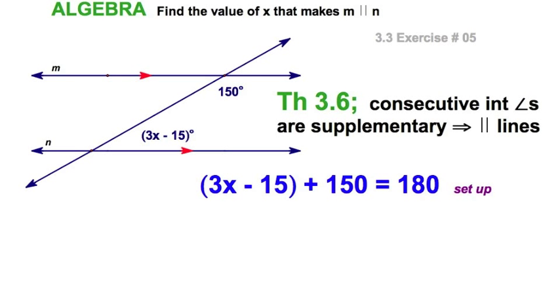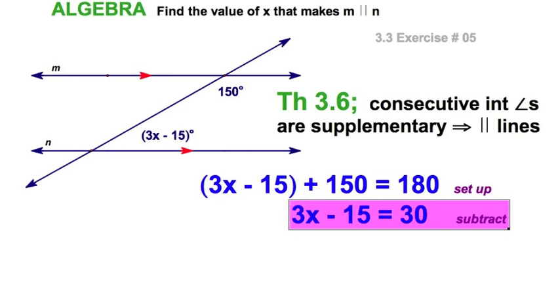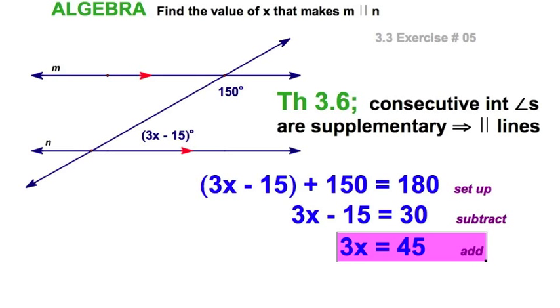So I suppose we can just do some algebra. I have a variety of ways to do it. I'm going to subtract the 150, then I'll add the 15 and then divide and we're done.